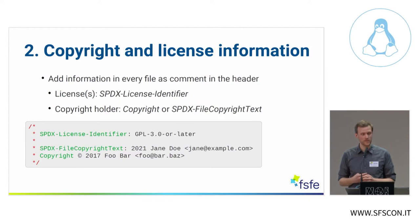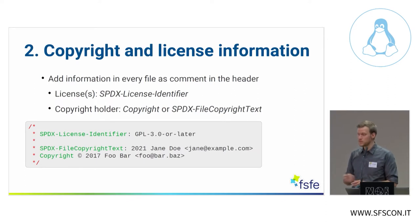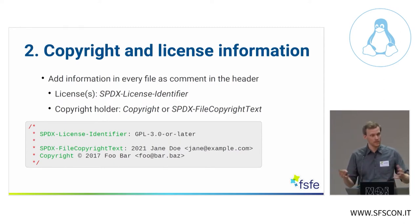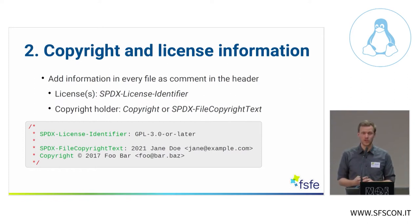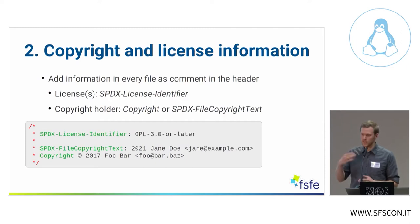The second step is to add copyright and licensing information to all files. We have two parts of information: the license — using the SPDX license identifier tag — and the copyright holder, which can be one or multiple. In this example, we have a file with a GPL-3.0-or-later license and two copyright holders, namely James Doe and foobar. We also support the more traditional copyright © symbol lines that you can use, so we try to be backward compatible.